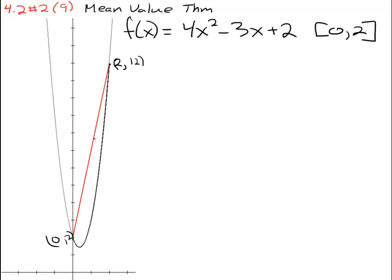They want us to use the mean value theorem. The first thing we are supposed to do is check the two hypotheses. We know that this function is both continuous and differentiable on that interval because it's a polynomial, and polynomial functions are continuous and differentiable on all intervals, so it's obviously going to be okay on this interval. So then we move on to what it tells us.